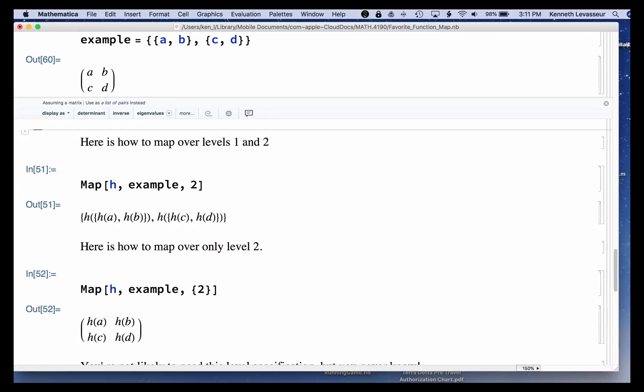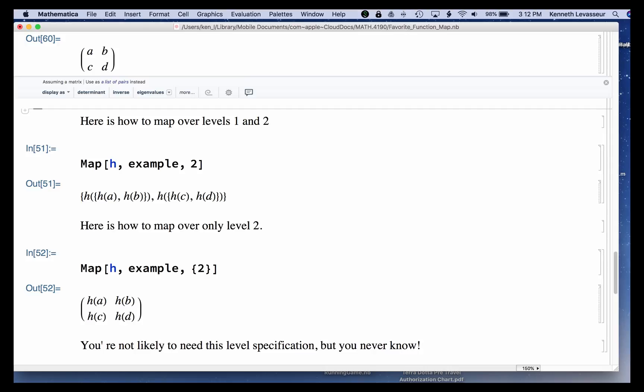With just the two, we do that. If you put braces around the two, we have a list containing two, it only applies, maps the function to that level. So it doesn't map h over the two lists here, but it goes into the second level and applies h to the individual letters a, b, c. So you get this. I don't use this very often myself, but it's there, and it's possible you might find it useful at some point.